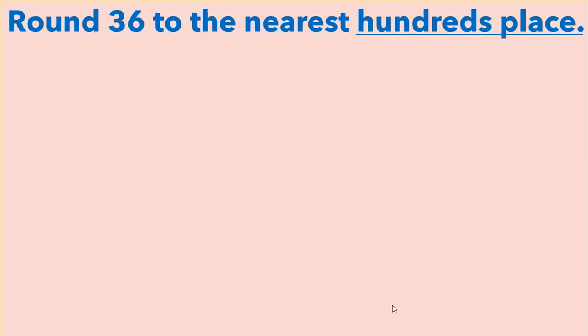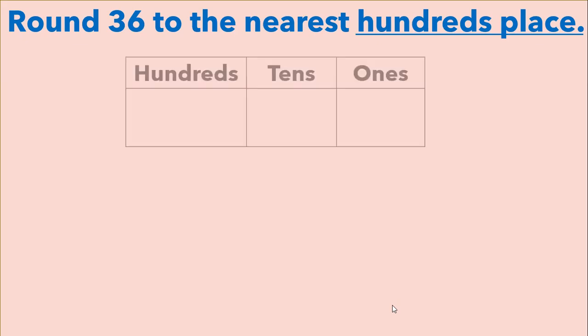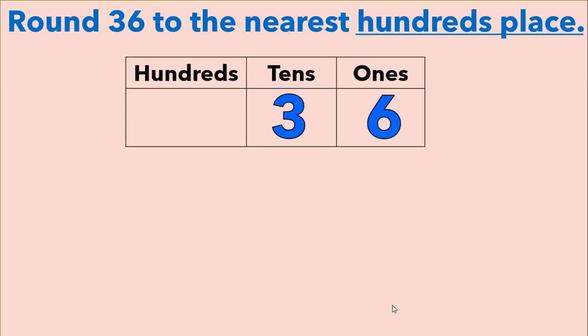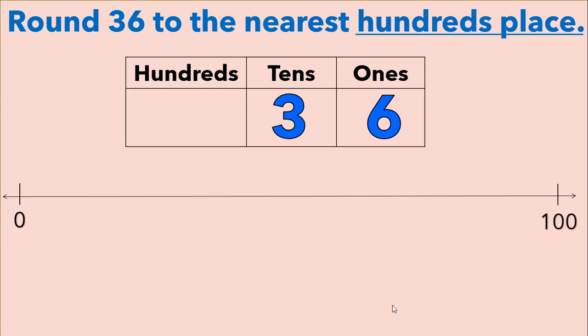Now let's try rounding thirty-six to the nearest hundreds place. We're still going to start with a place value chart and inserting our digits. Here we can see that we have zero hundreds, so we're going to start our number line with zero hundreds, which equals zero ones. One more hundred than zero hundreds is one hundred, so we're going to put one hundred at the end of our number line. We're going to break our number line up into ten equal parts, but each part is going to represent ten instead of one. We can see that there are ten parts between zero and one hundred, so each part represents ten.